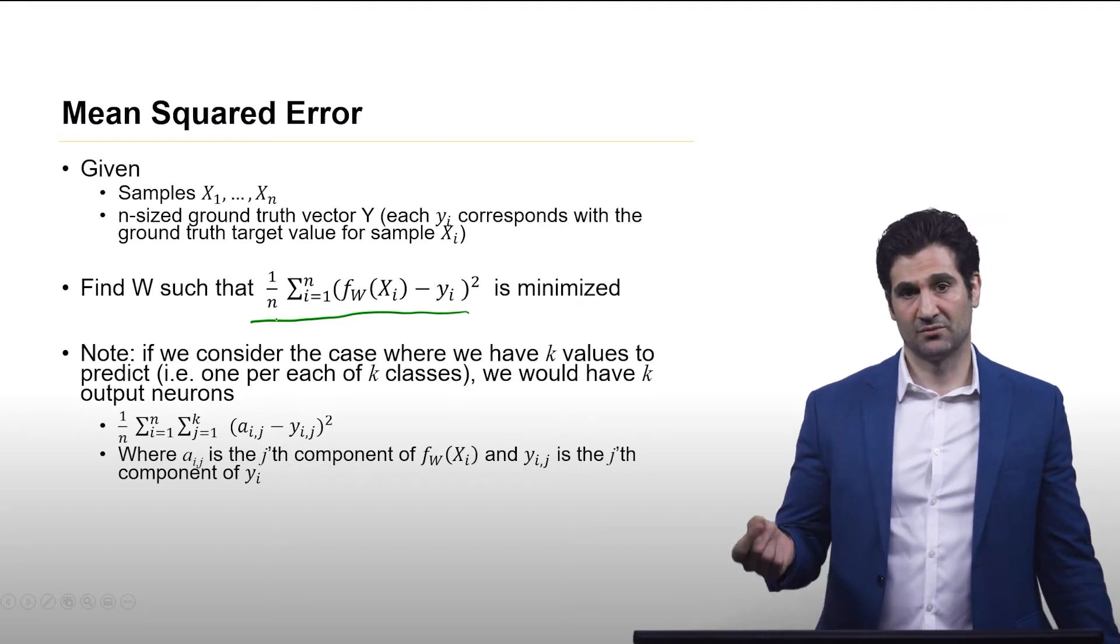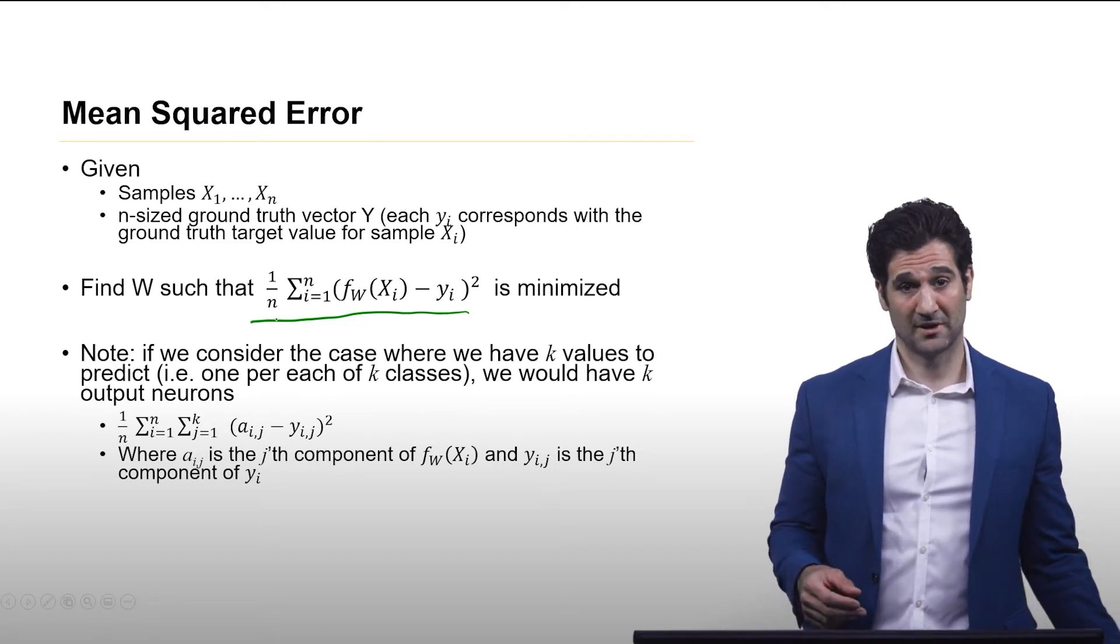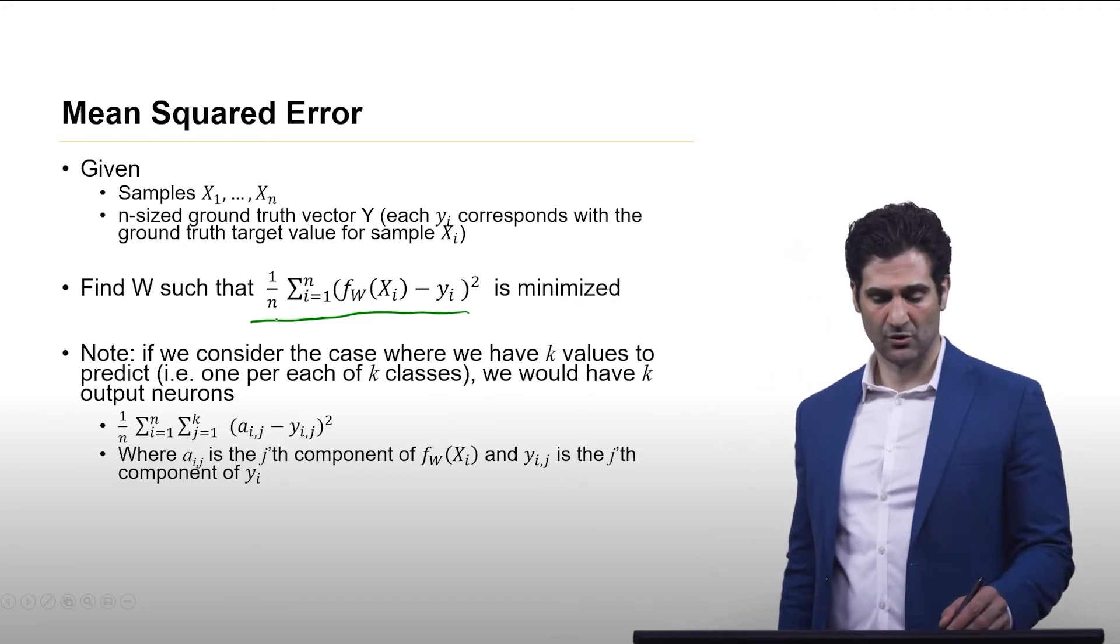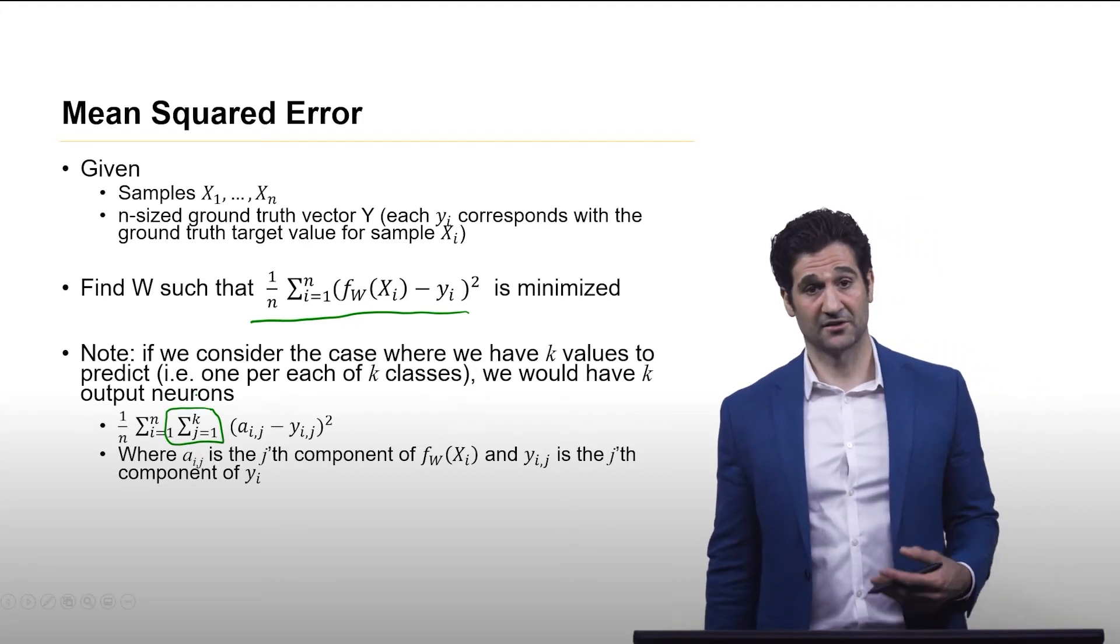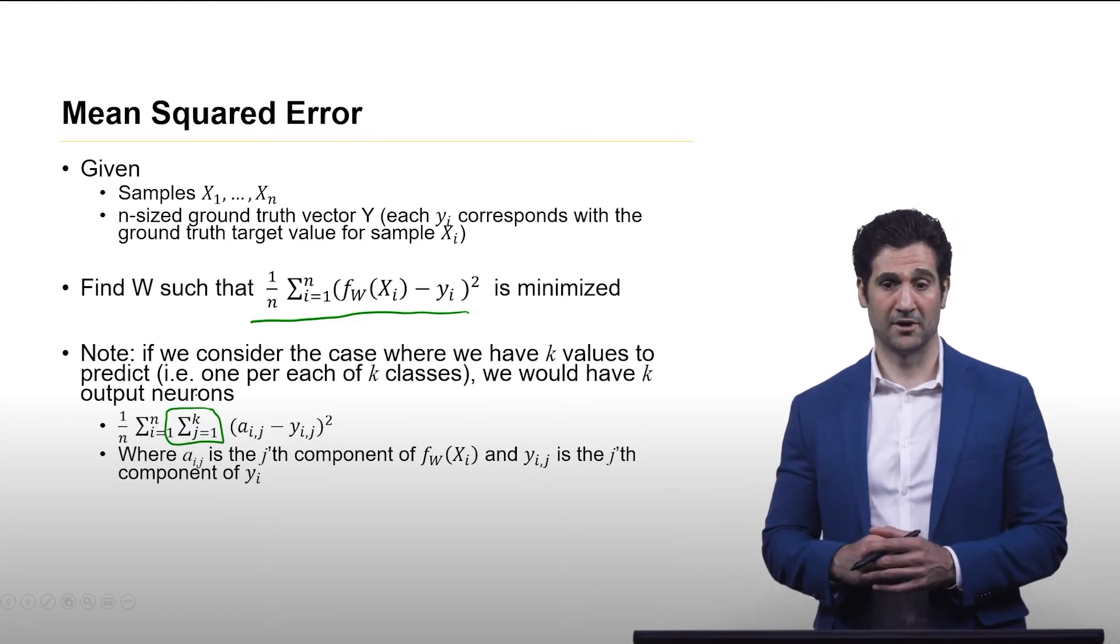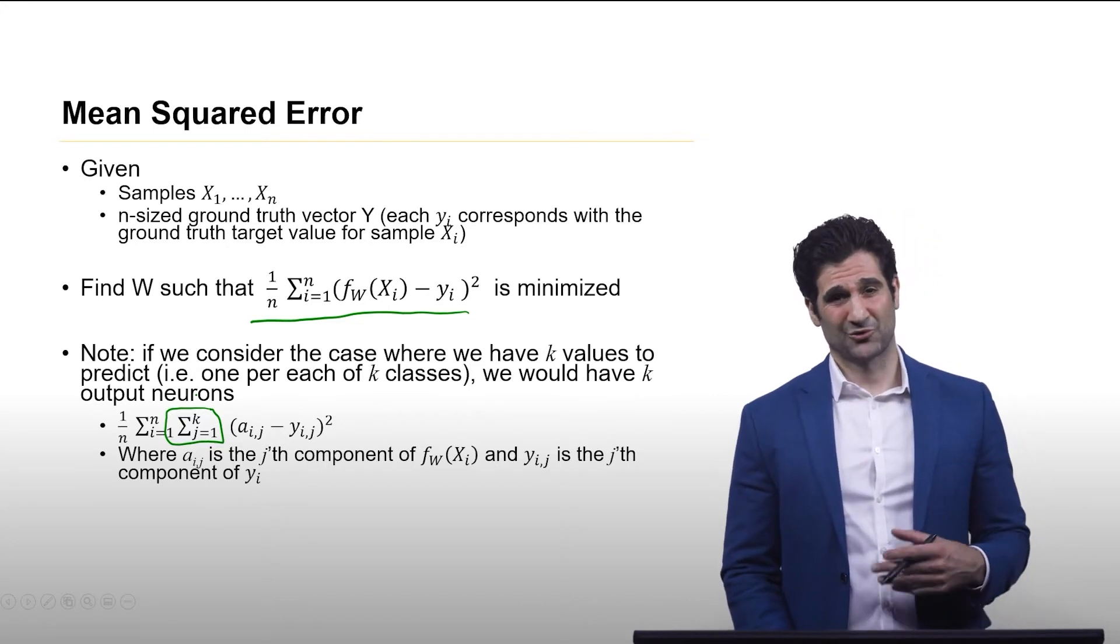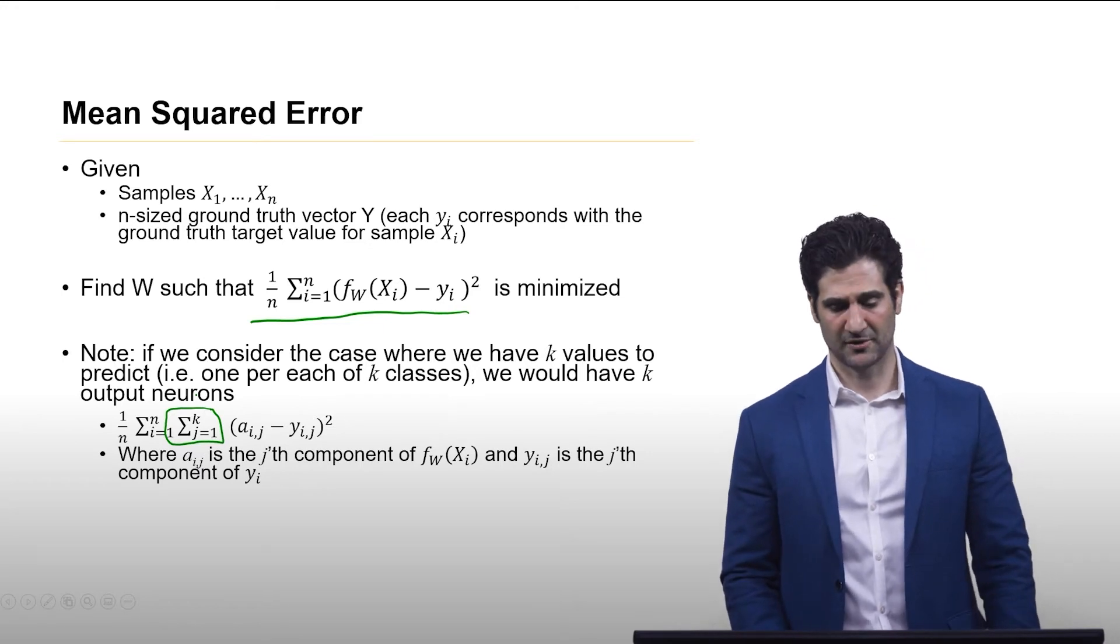One just quick technical note here, there might be cases where you have a neural network that has, say, k different output neurons, maybe going along with k different classes. In this case, we make a slight adjustment where we look at a linear combination of the outputs and add in another summation there. But you're just summing a bunch of differentiable functions, so this doesn't make any difference to the math. Throughout this lecture, we'll generally assume there's just one output to keep things simple, but please keep that in mind.